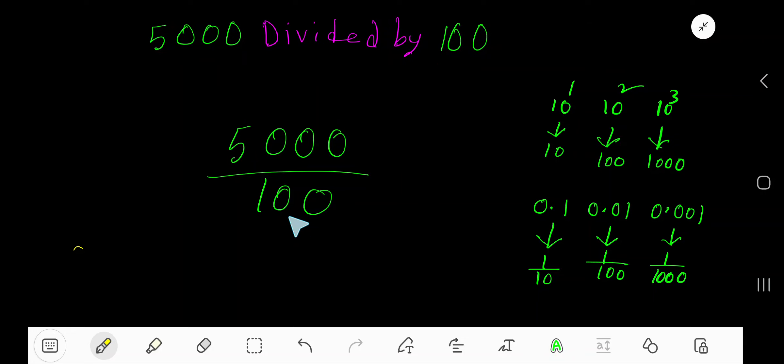5000 divided by 100. Look here, the denominator is 100, or the divisor is 100. 10, hundred, thousand - these are called powers of 10. If you want to divide a number by a power of 10, just count the number of zeros and move the decimal point.